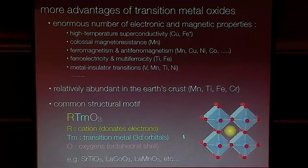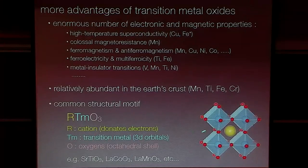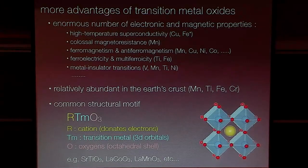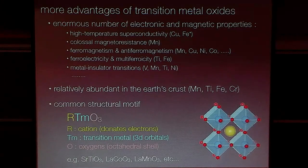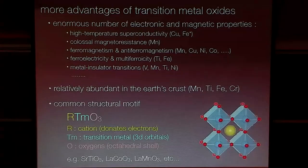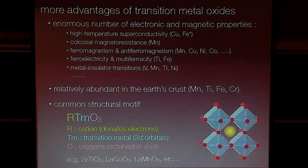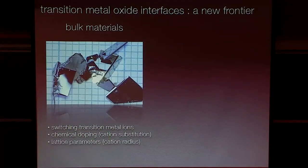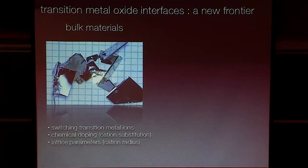One thing that's quite important is that most of these compounds share a very common structural motif. Most of them basically form this so-called cubic perovskite structure, where you have a transition metal embedded inside an oxygen octahedra cage, with a rare-earth cation that you can basically swap out. In this one structural unit, just by switching out the transition metal or the cation, you can dial through all these properties. There's a huge amount of tunability basically available to you.